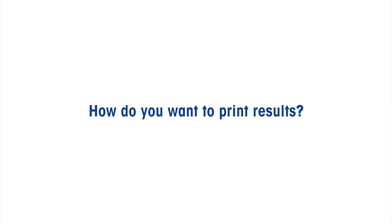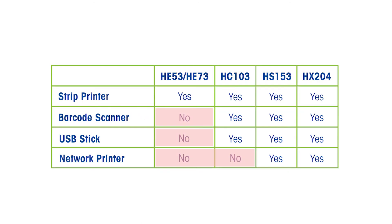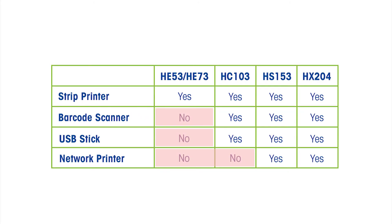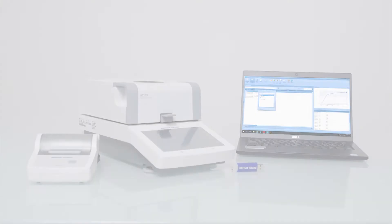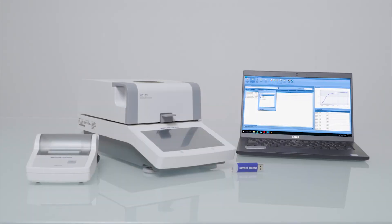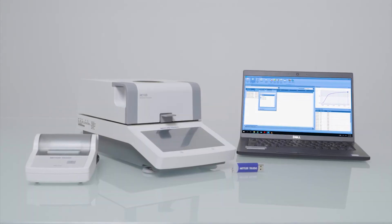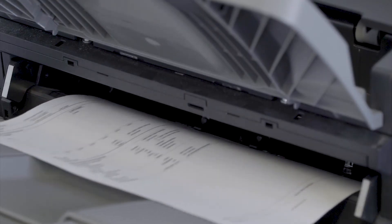How do you want to print your results? Strip printers can be connected to most moisture analyzer models. With more advanced instruments it's also possible to send a PDF report to a USB stick or a network printer and to customize the printout content.